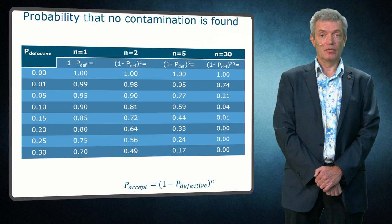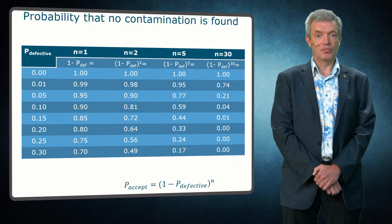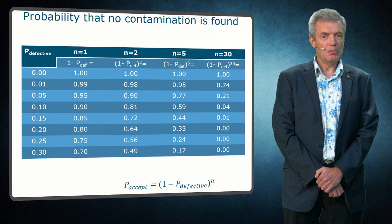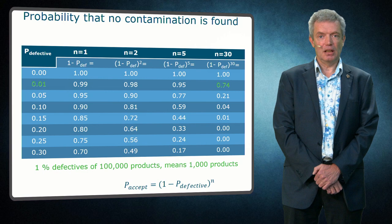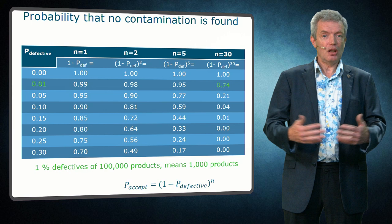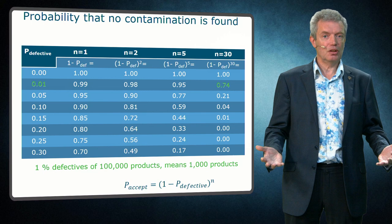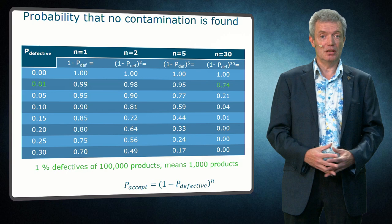The more samples you take, the more likely you are to detect higher defective rates. However, even at 30 samples the probability to detect a 1 percent defective rate remains rather unsatisfactory. You have still a 26 percent probability to miss that contamination level, and if this is a serious pathogen you do not want to send a batch with hundreds of thousands of products to the market with a 1 percent defective rate. Often a 1 percent defective rate is not acceptable, and even a sampling plan with 30 samples has a rather high probability to miss this.